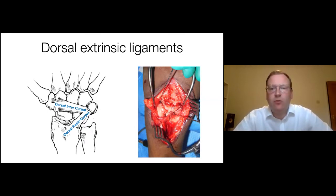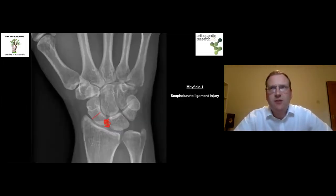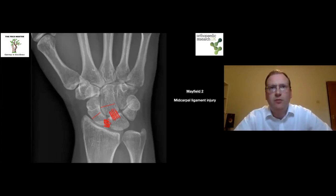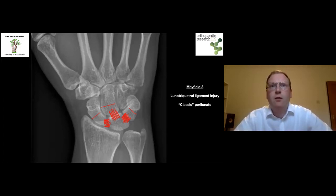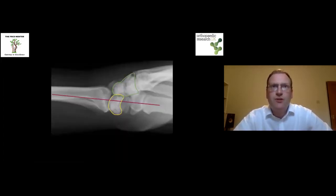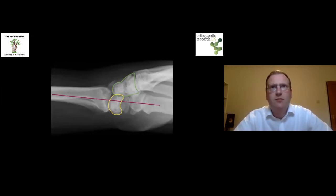Going into more detail on the Mayfield classification: Stage one is a scapholunate ligament injury. Stage two adds a midcarpal ligament injury. Stage three has scapholunate, midcarpal, and lunotriquetral ligament injury — this is your classic perilunate injury. You can see that collinearity between the long axis of the capitate and the long axis of the radius is no longer present in stage three.